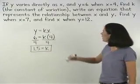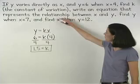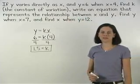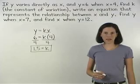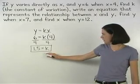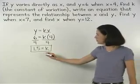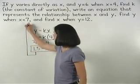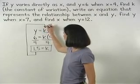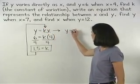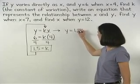Next, we're asked to write an equation that represents the relationship between x and y. Since we know that k, our constant of variation, is 1.5, we simply plug 1.5 back into our direct variation formula for k. And we have y equals 1.5x.